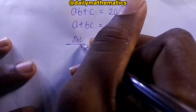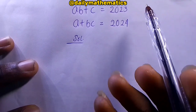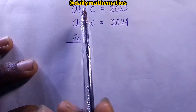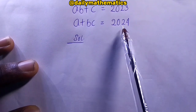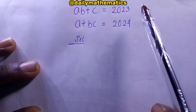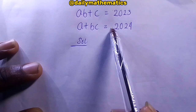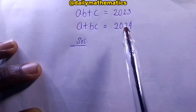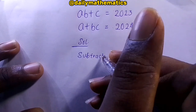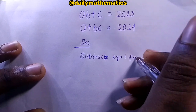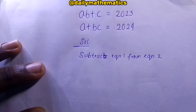We have to find a, b, and c. This should be a simultaneous equation solved by two equations, but we have three letters in one equation. However, notice that 2024 and 2023 differ by 1, so if we subtract equation one from equation two, we will see something useful. So the first thing we're going to do is subtract equation one from equation two.